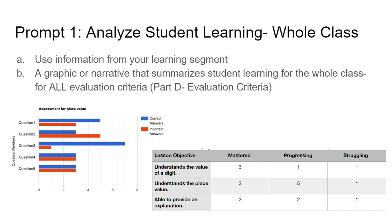Prompt 1B asks for a graphic or a narrative that summarizes student learning, and it says be sure to include all of the learning based on the evaluation criteria. My recommendation would be to start with that evaluation criteria and modify it for your use. I'll show you an example. The two examples are from pre-student teachers that completed my class last semester — it's a little more simplistic, but I'll show you a better example on the next slide.